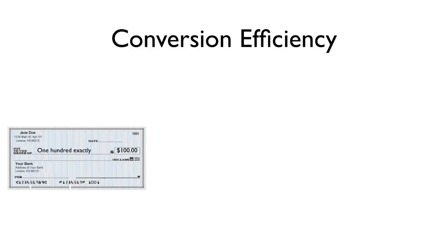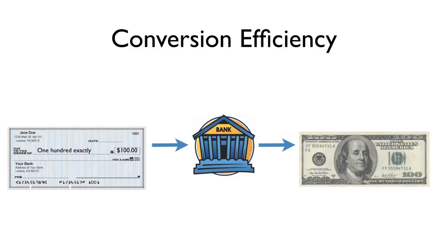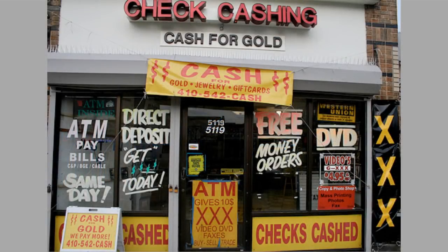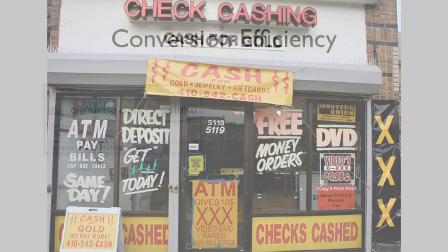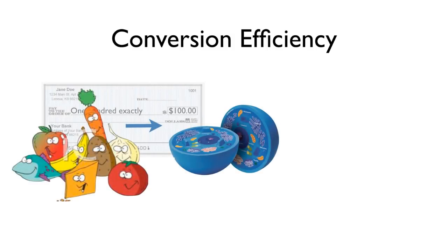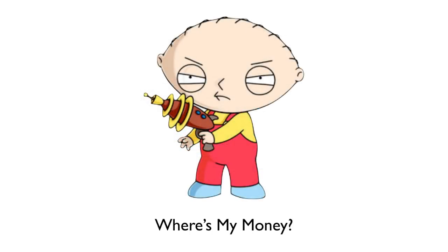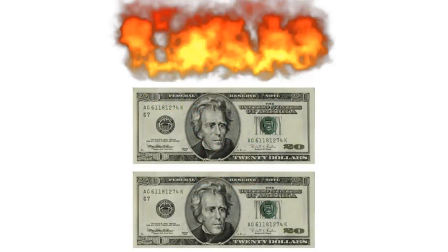How good are we at doing this? If you take your paycheck and go to a bank for the conversion, the bank should give you the exact same amount as your paycheck — unless you go to one of those check-cashing places where they charge fees. The food that you eat gets converted, and if you had $100 worth of food, the amount of usable energy you're going to get out of it in the form of ATP is only about 40 bucks. So we're about 40% efficient at converting food energy into ATP.